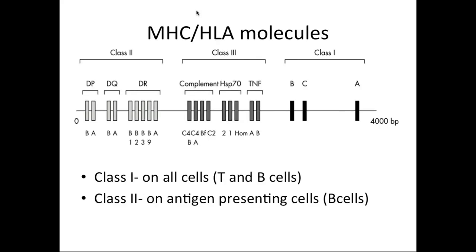The HLA molecule is on chromosome six. You have class one antigens — A, B, and C — which are present on all cells, T and B cells. When doing a crossmatch, this is important to assess whether it is due to class one or class two antibodies. T and B cell crossmatch will be positive if there are class one antibodies. Class two antigens are only on antigen-presenting cells — specifically B cells — so if only a class two antibody is present, only the B cell crossmatch will be positive and the T cell should not be positive.